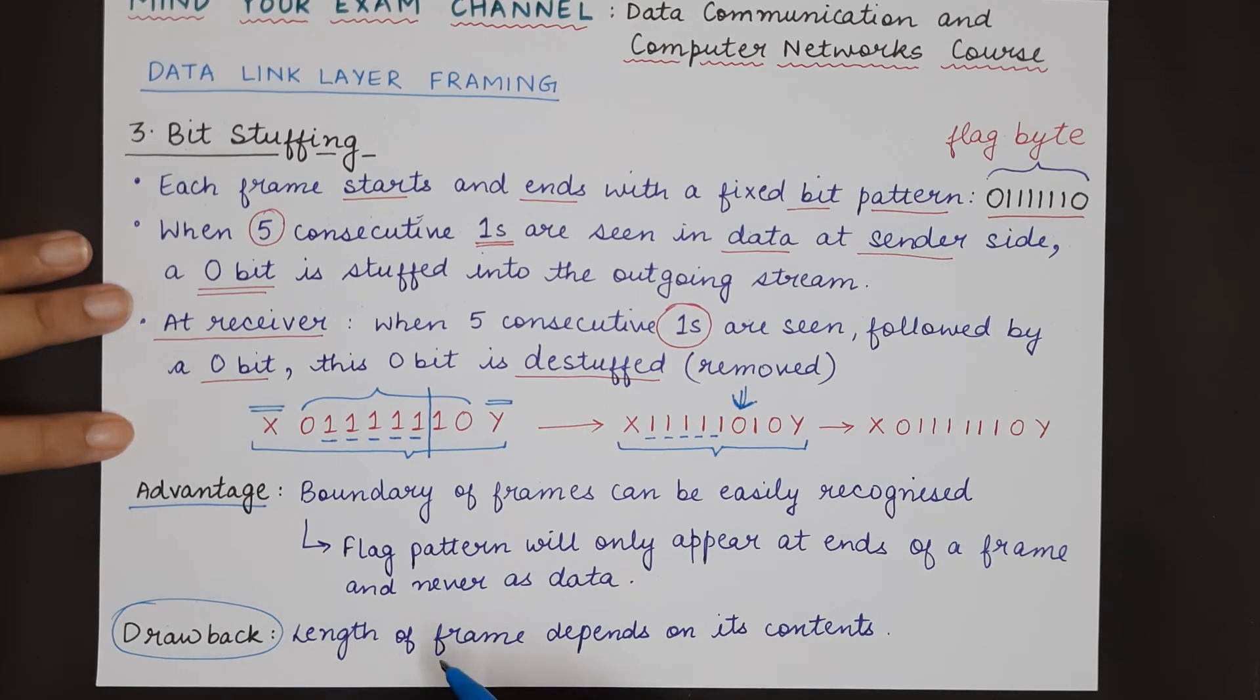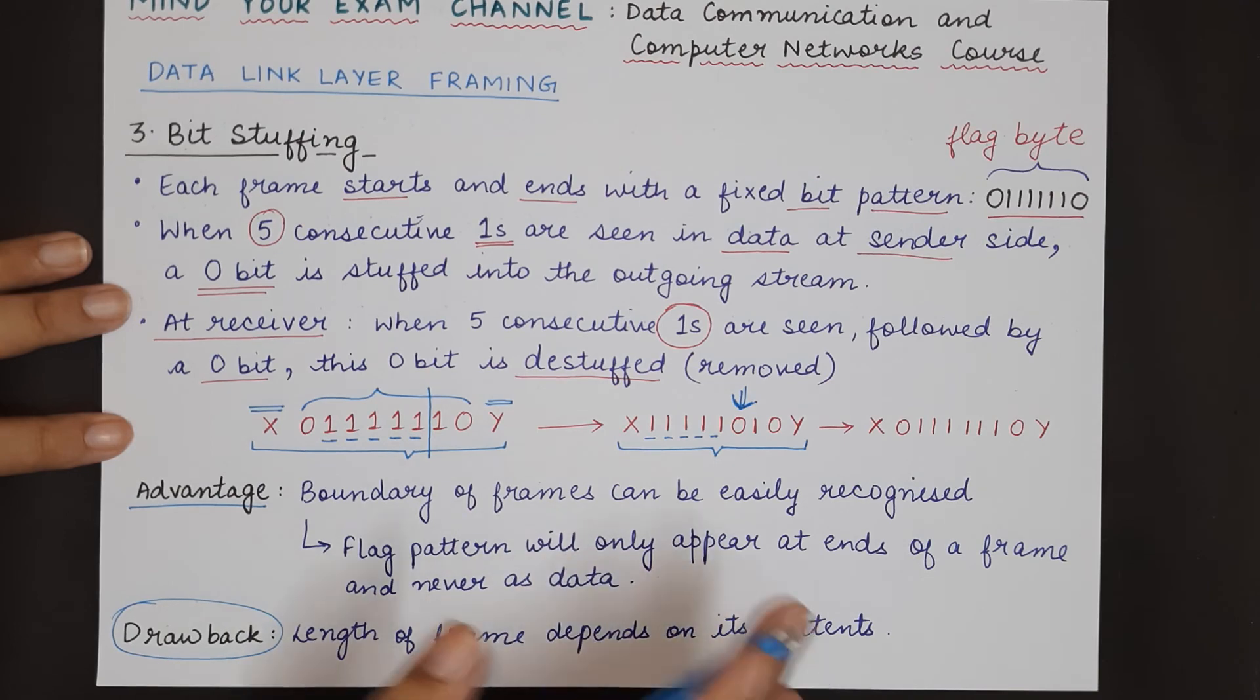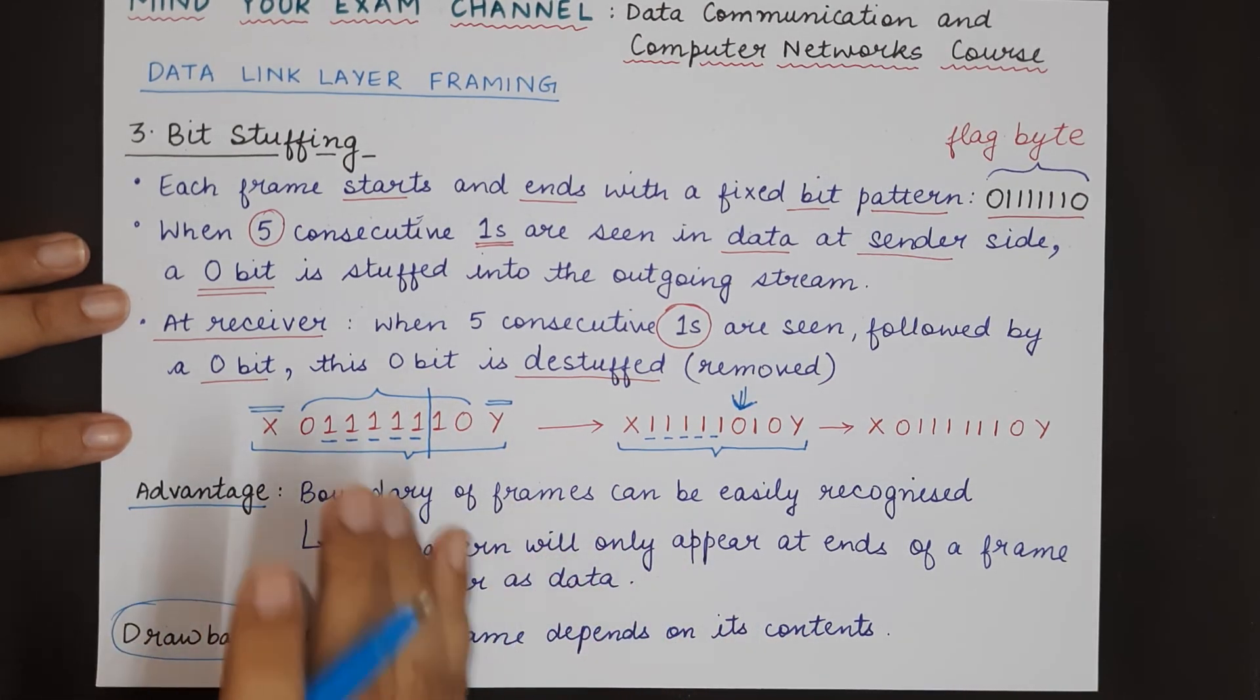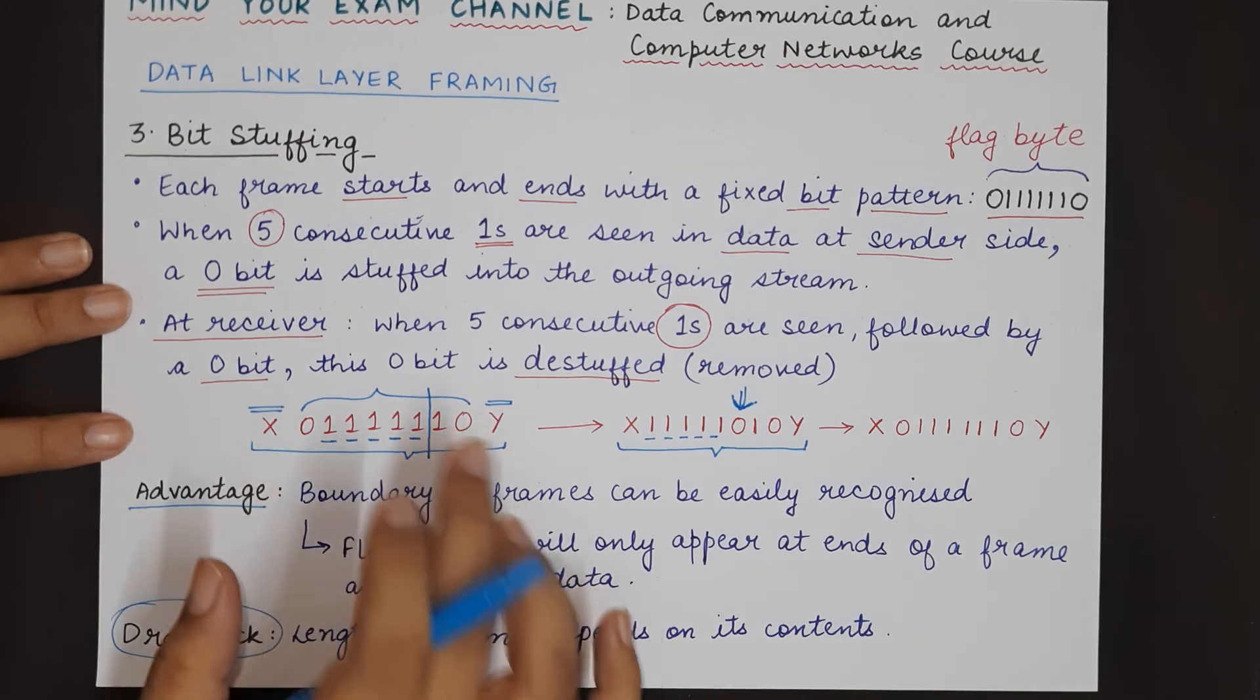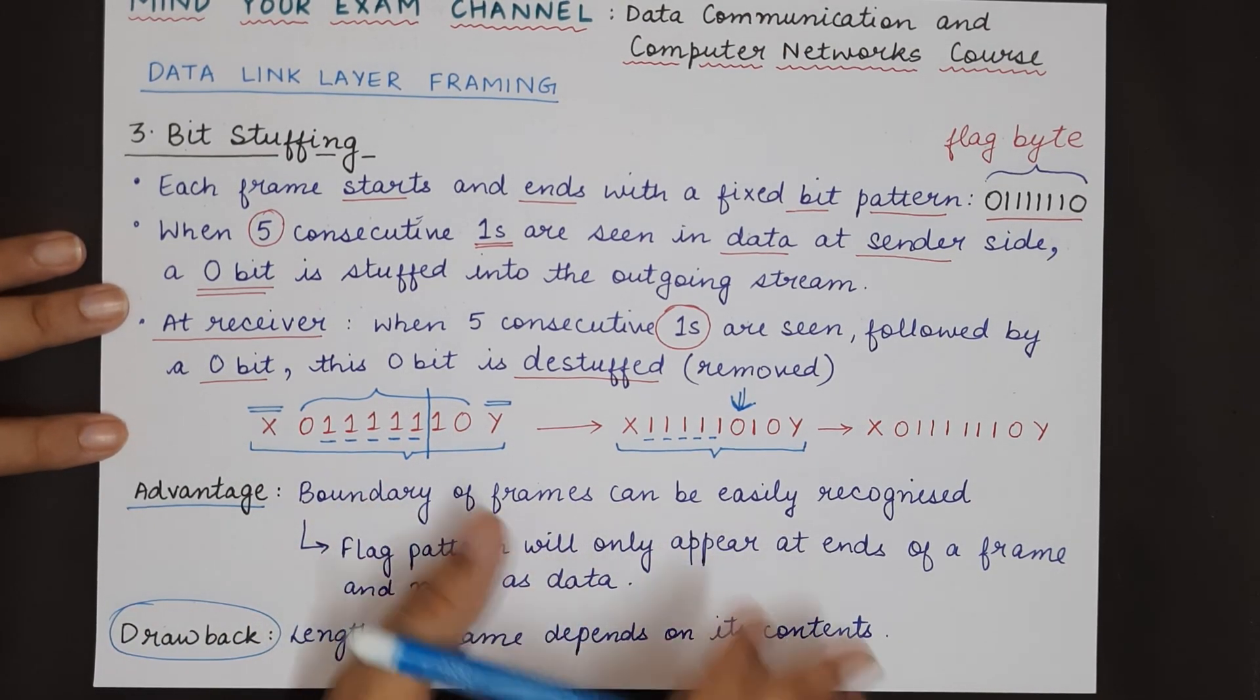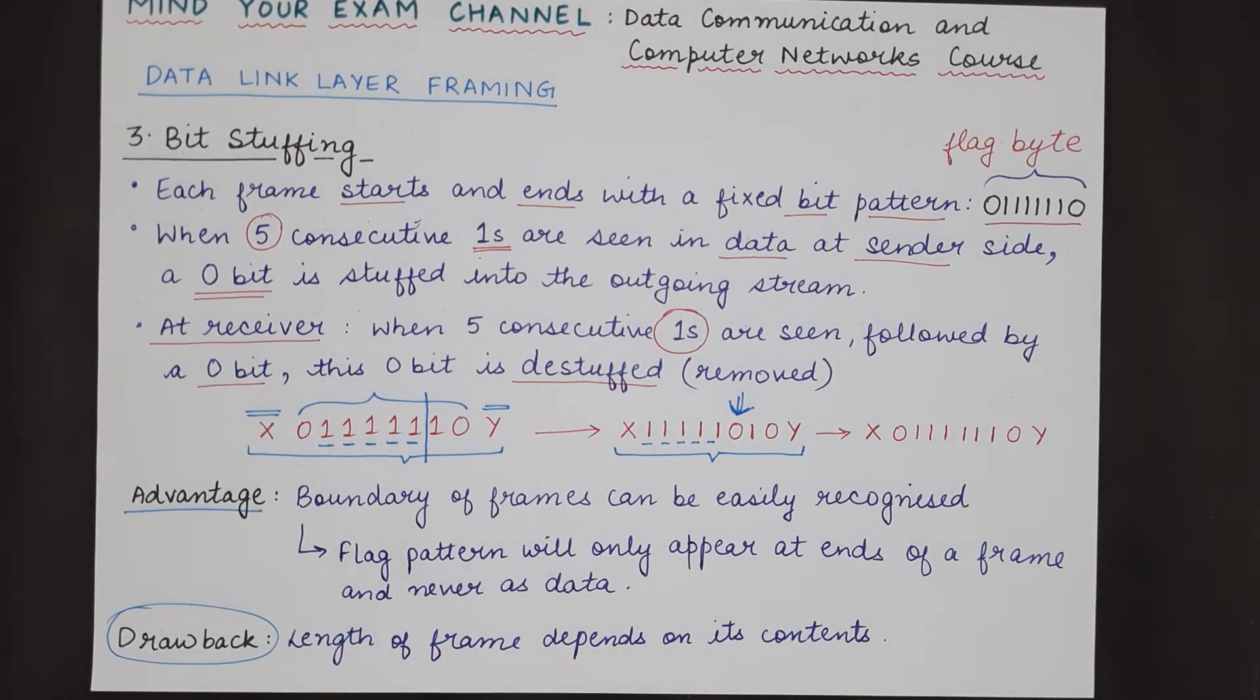It is not fixed. The sender is sending a certain number of bits, but the data link layer has to make sure that the data is not confused with the patterns, so the length of the frame may vary depending upon these patterns. This is all about bit stuffing. I hope you have understood this topic. Thank you for watching this video and see you in the next one.